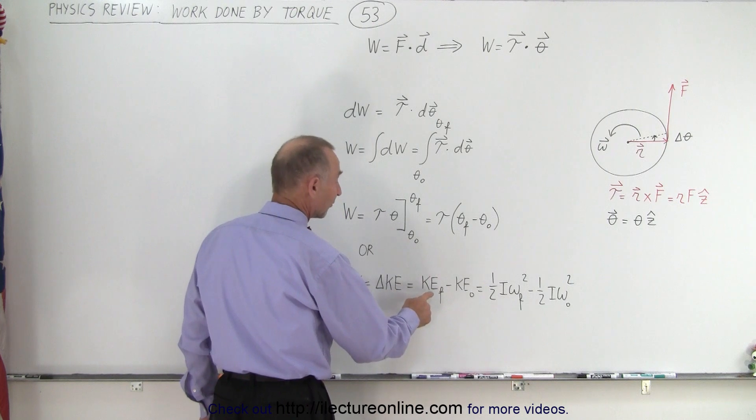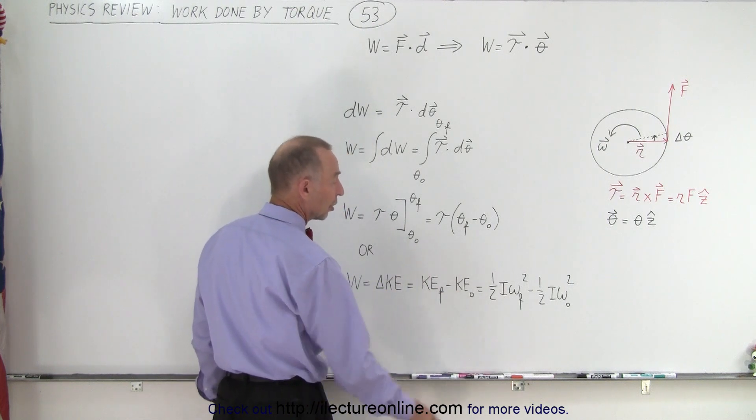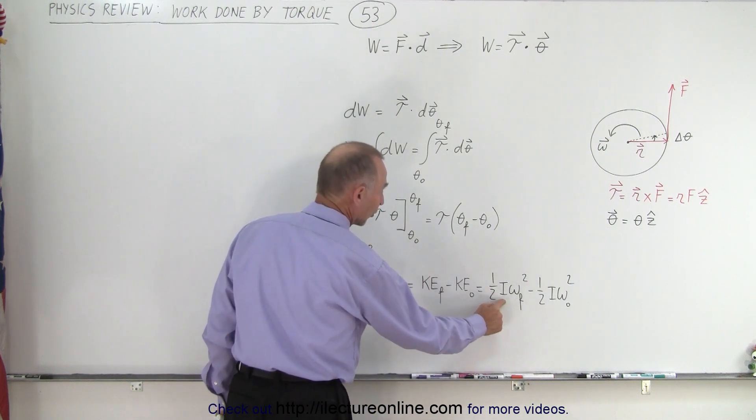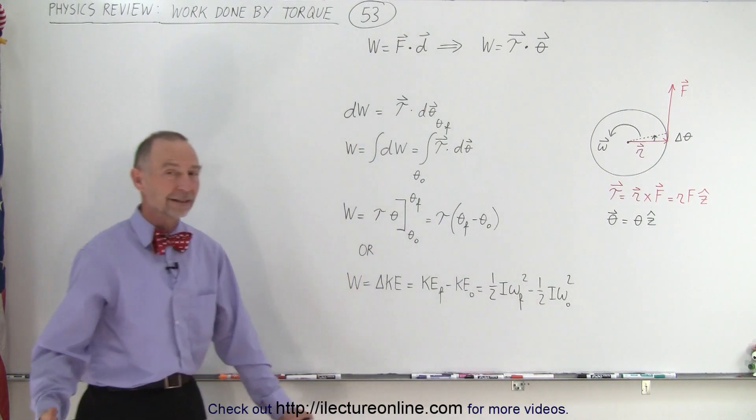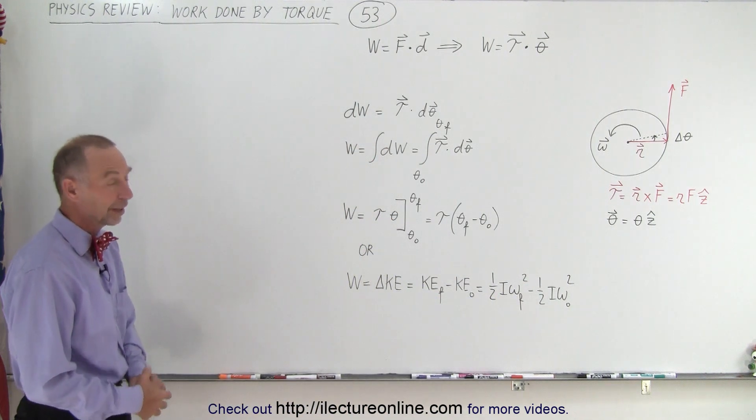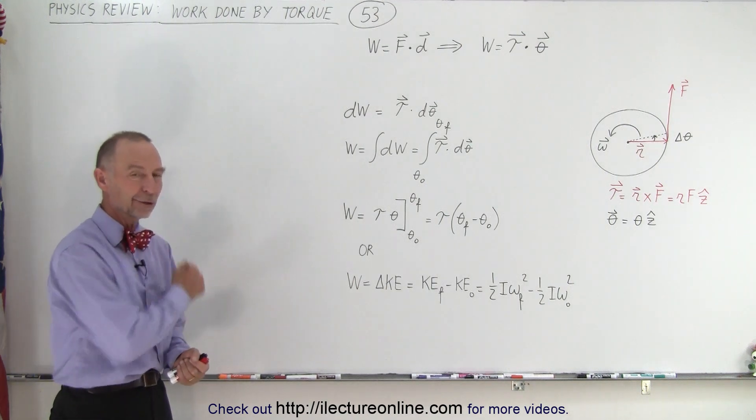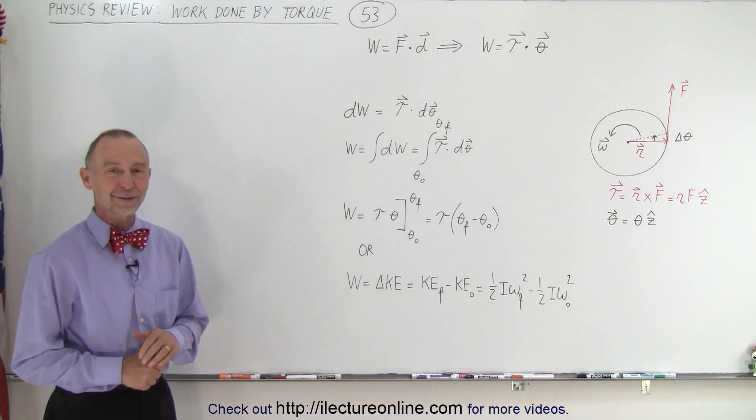The change in kinetic energy will be the final minus the initial kinetic energy, which is one-half times the moment of inertia times omega final squared minus one-half times the moment of inertia times omega initial squared. That is how you deal with work done by torque.